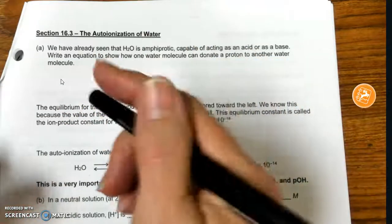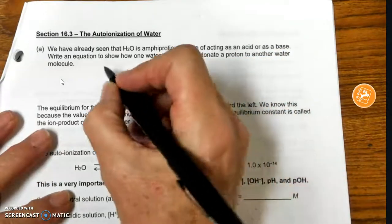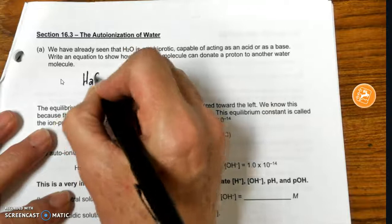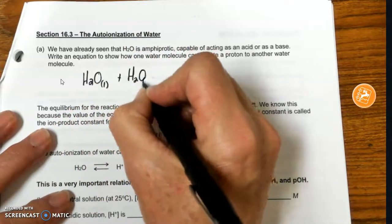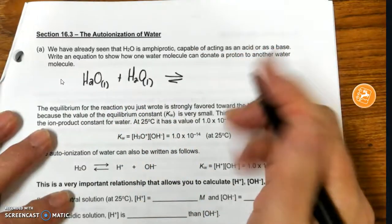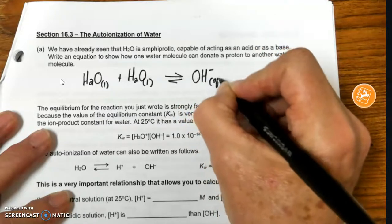Now, we know that water is ampriprotic, which means it can act as an acid or a base. So I can take liquid water and liquid water, and one will give up a proton, and one will accept a proton, and I will get this.